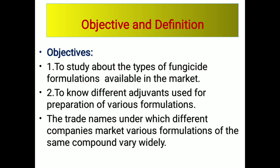The next objective is to know the different adjuvants used for preparation of various formulations. Adjuvants are certain substances added during the preparation of any fungicide to increase its efficiency. The third objective is to know the different trade names and common names of different products available in market, because the common name and active ingredient of a fungicide is often the same, but the trade name differs according to the company.